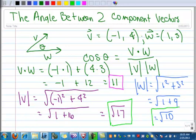Now we take all three of these things. The dot product, that's in the numerator, and that was 11. The magnitude of v is the square root of 17. The magnitude of w is the square root of ten. When we multiply those together,